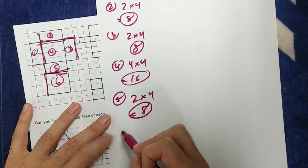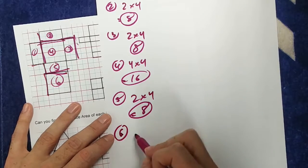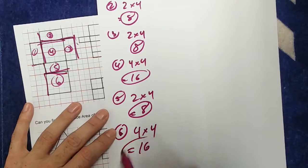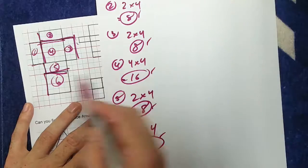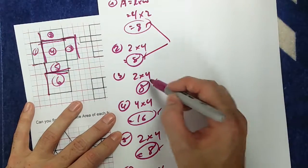And the last one I have again, 4 by 4. So for the last one, number 6, or shape 6, I have a 4 by 4, which is 16. And so I have the area of all my different shapes, all my different 2D rectangles, and now I just add them all up together. That's all I need to do.